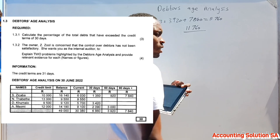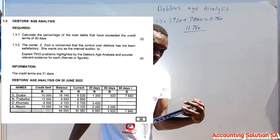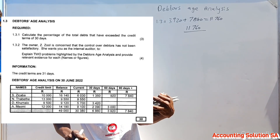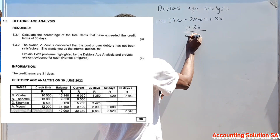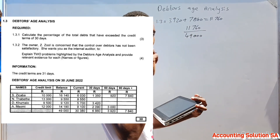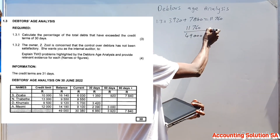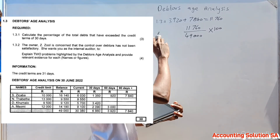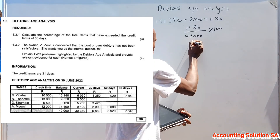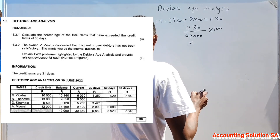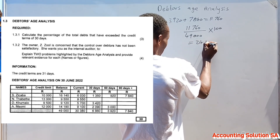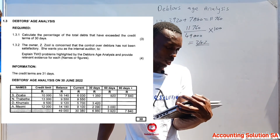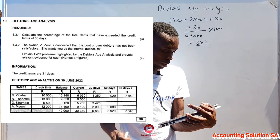We divide 11,760 by the total of balances, which is 49,000. Since they are asking for a percentage, we multiply by 100. Doing this calculation gives us 24%. So 24% is the amount that has exceeded the credit terms of 30 days.